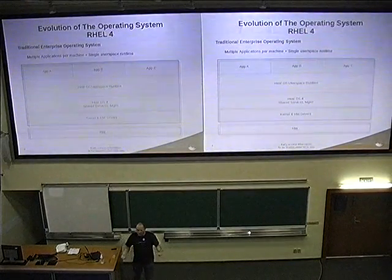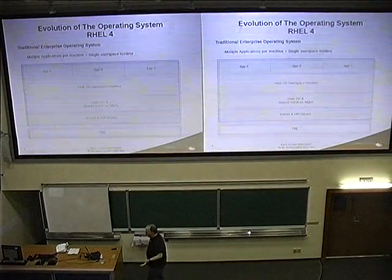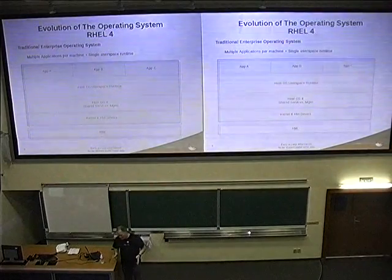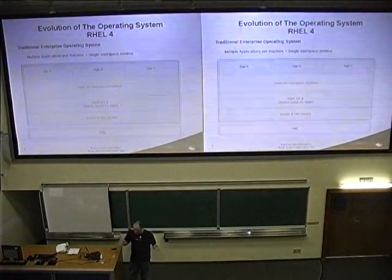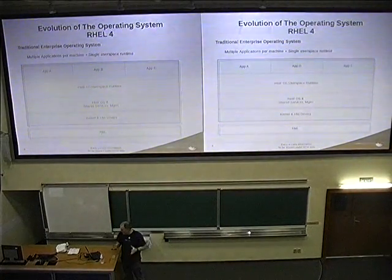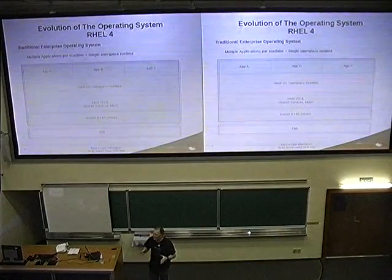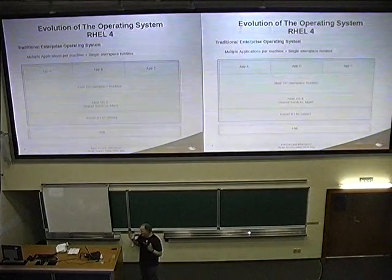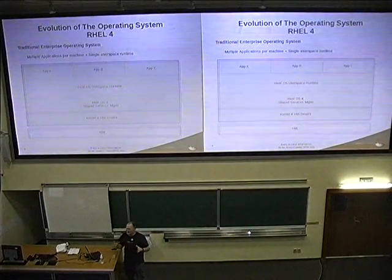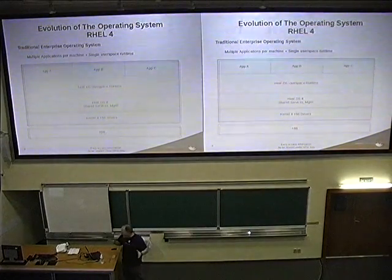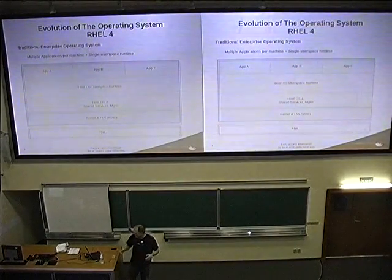If you look at the evolution of the operating system from RHEL 4, at RHEL 4 everything was processes using the existing user space on the system. There was nothing virtualized. It was the same way we've been doing computing since the 1950s almost — other than IBM, they did virtualization back then. But basically for Linux and Unix, it's always been the same up to RHEL 4.